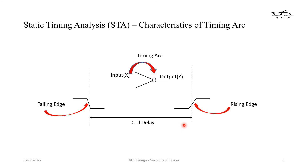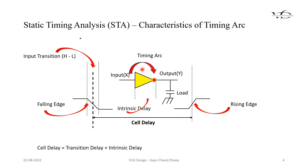In the next slide, we have connected a load to the output of this particular cell. When there is an input transition happening from high to low, the output transition happens from low to high. So we will have the input transition delay. The total cell delay will be the transition delay plus the intrinsic delay. The transition delay is from 50% of the input to 50% of the output.